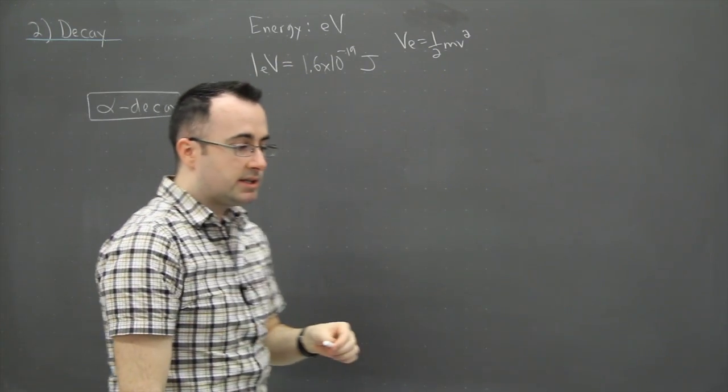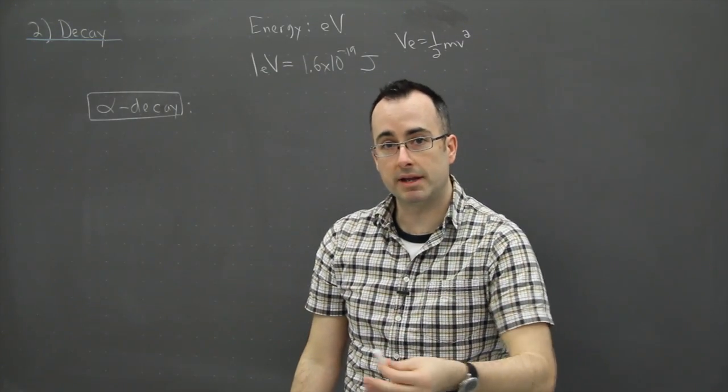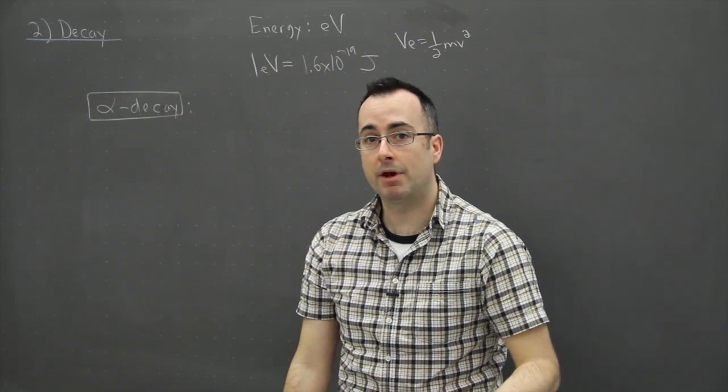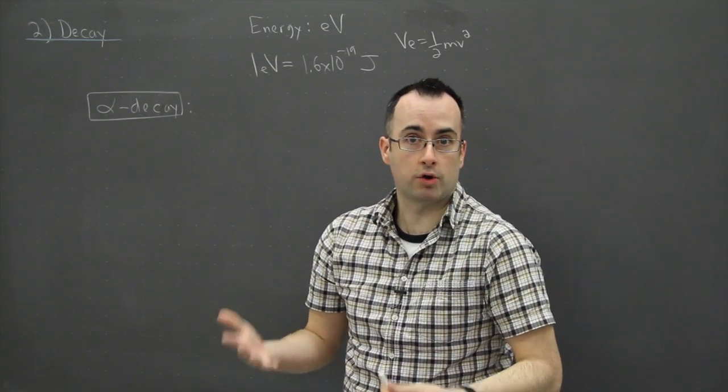Well by the way first of all when we see these, they were called alpha and the next one by the way is going to be called beta. The next one is going to be called gamma. Those ones were called that because at first they weren't sure what that particle was.